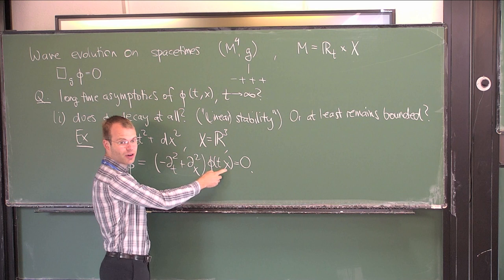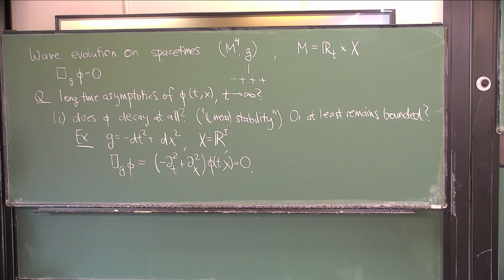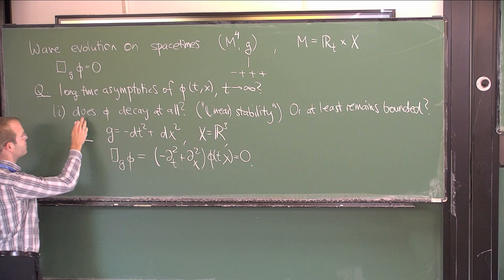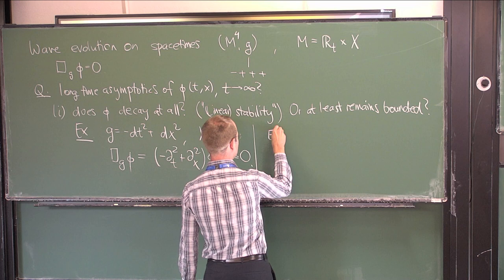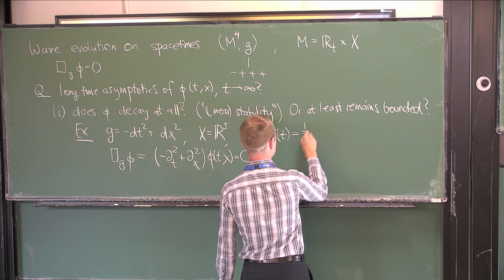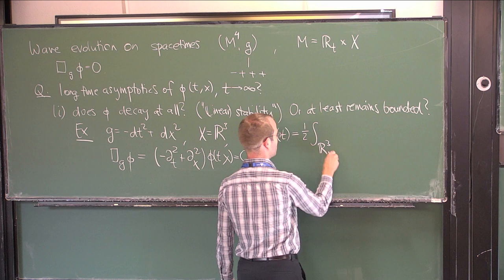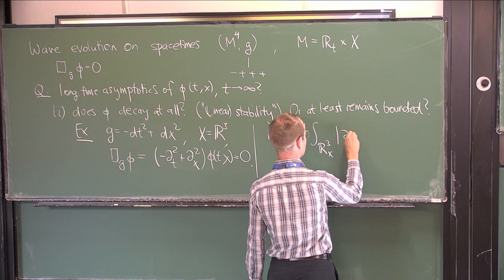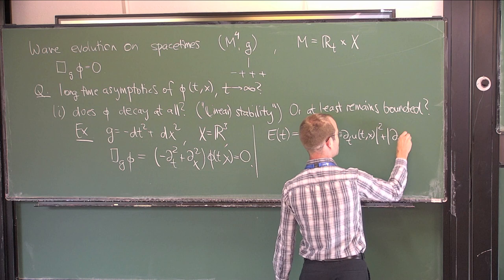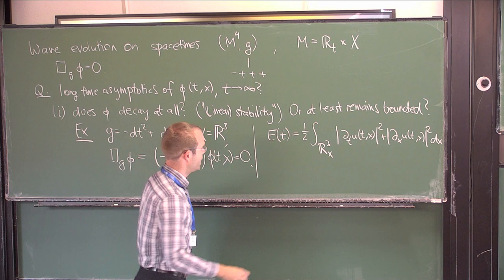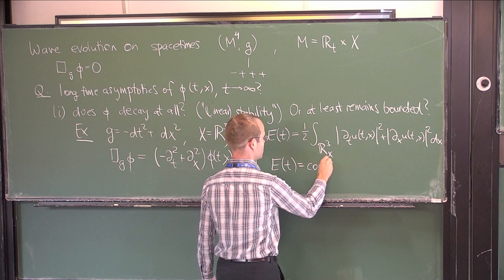For such a wave equation you also have to impose two pieces of initial conditions: you specify what φ equals at t=0 and also the time derivative of φ at t=0. There exists a unique solution of this equation. As is well known, there exists a conserved quantity — the energy — which is typically defined as one-half times the integral over R³ of (∂_t φ)² plus (∂_x φ)², dx.